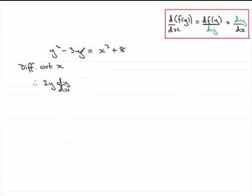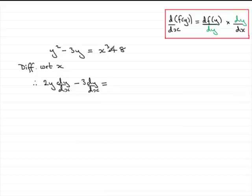Moving to the second term, minus 3y: differentiate that with respect to y first to get minus 3, then tag on dy/dx. For x cubed, differentiating with respect to x is straightforward — that's just 3x squared. Differentiating the constant 8 gives zero.